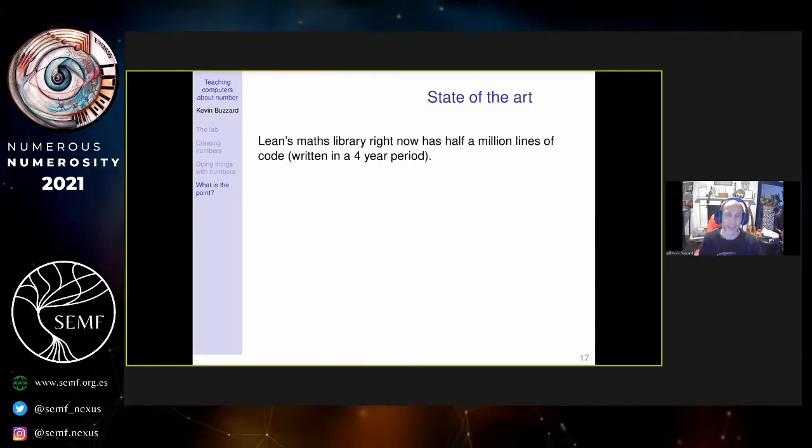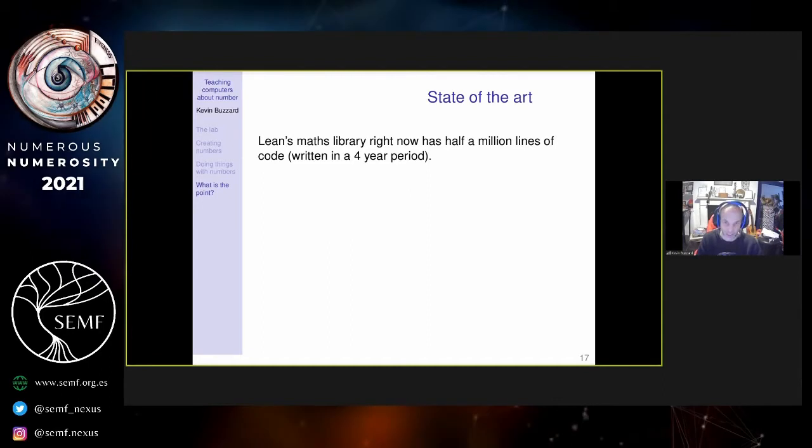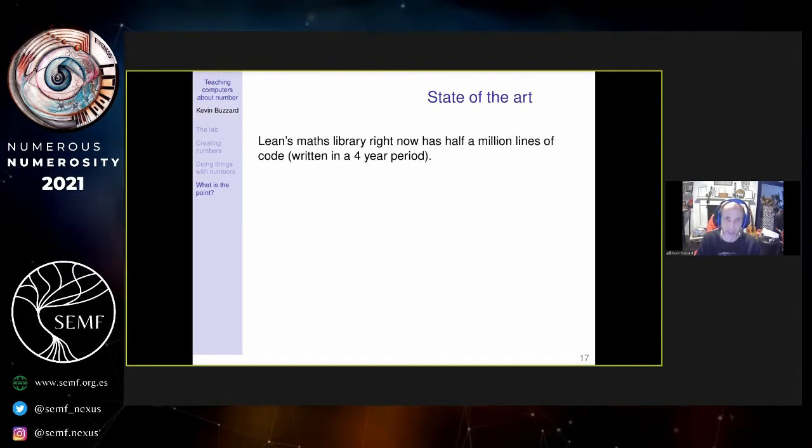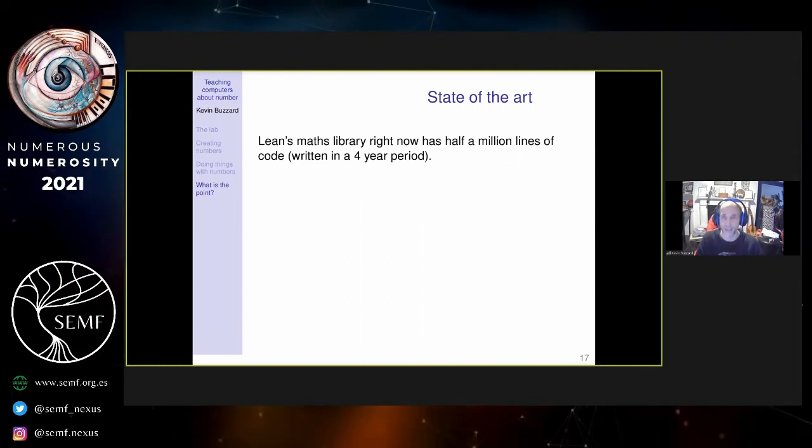Other mathematicians have become interested and they've started making the kind of things they use in their research. Within four years we've gone from no code to half a million lines of code. We have this gigantic math library.